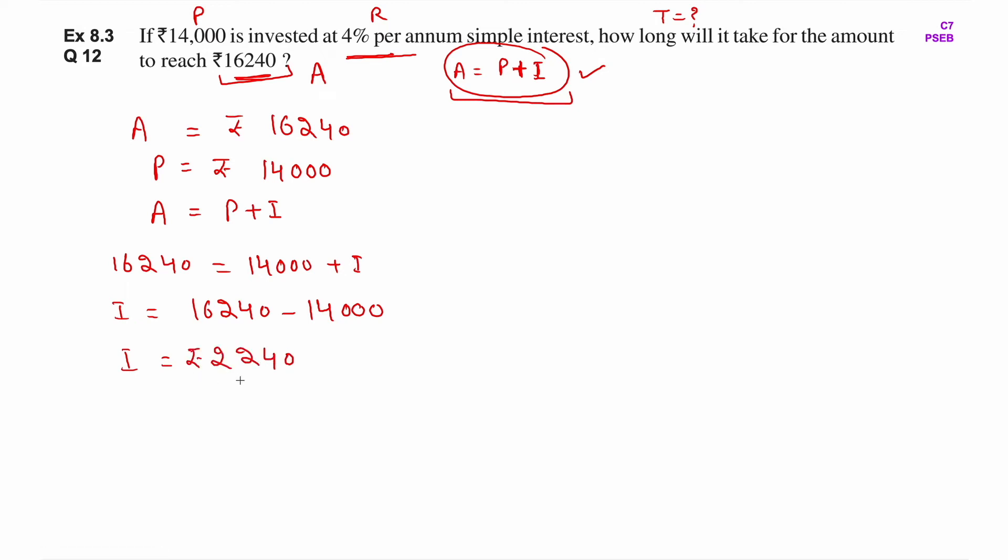So this much interest is generated. Now we know interest, we know P, and R is also given as 4% per annum. So we can find the T value. How? I equals P into R into T upon 100. We've found the I value, so let's put it in.